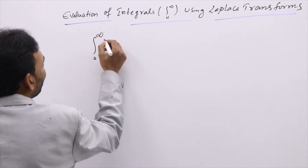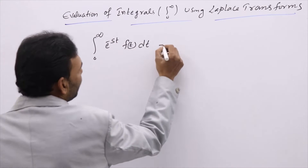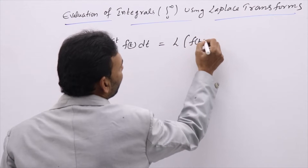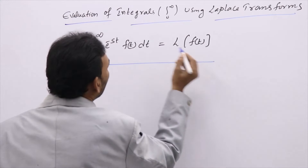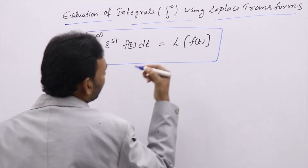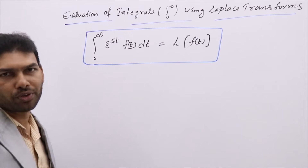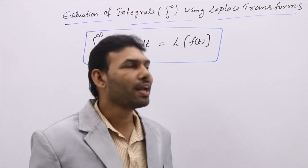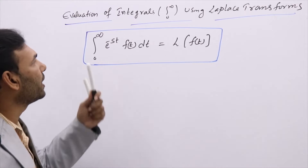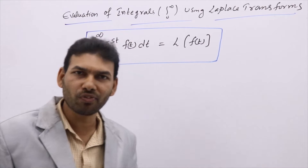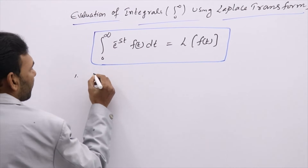The principle we are going to use is the actual definition of the Laplace transform: the integral from 0 to infinity of e^(-st) times f(t) dt is treated as L{f(t)}. This is the formula or principle we will use to evaluate any integral with limits 0 to infinity using Laplace, without using a standard integration formula.